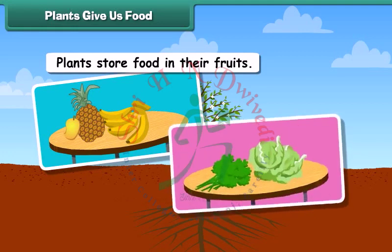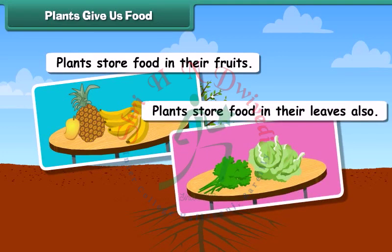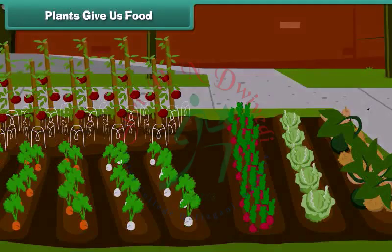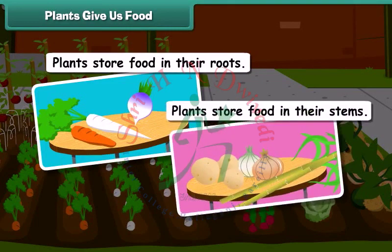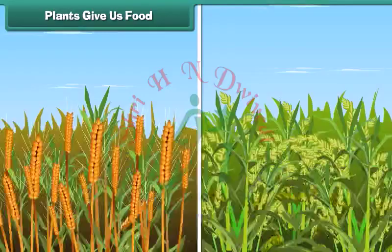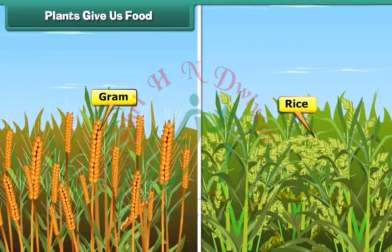There are some plants which store food in their leaves. Some plants store food in their roots. Some plants store food in their stems. Many plants also store food in their seeds, and we eat many of these seeds.